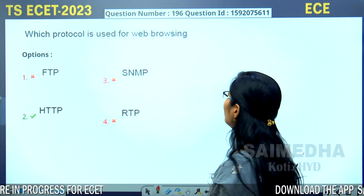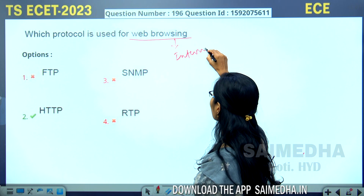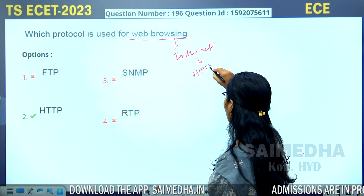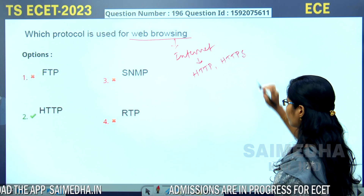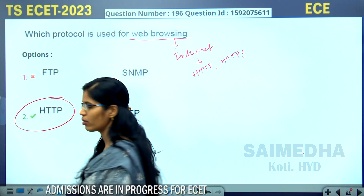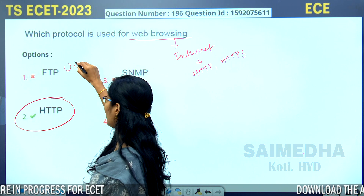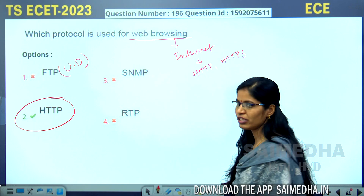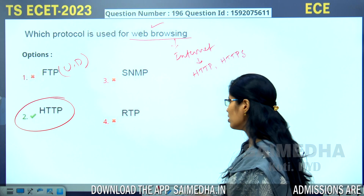Which protocol is used for web browsing? For internet and web browsing purposes, HTTP and HTTPS are the default protocols. FTP (File Transfer Protocol) is used for uploading and downloading, but Hypertext Transfer Protocol (HTTP) is used for web browsing. So the answer is HTTP.